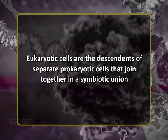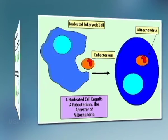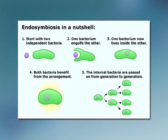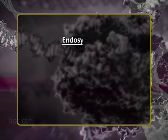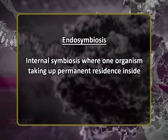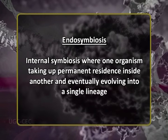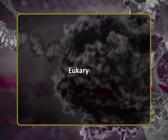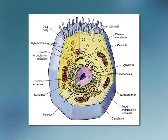In fact, the mitochondrion itself seems to be the great-granddaughter of a free-living bacterium that was engulfed by another cell — perhaps as a meal — and ended up staying as a sort of permanent house guest. The whole cell profited from the chemical energy the mitochondrion produced, and in return the mitochondrion benefited from the protected, nutrient-rich environment surrounding it. This kind of internal symbiosis, where one organism takes permanent residence inside another and eventually evolves into a single lineage, is called endosymbiosis.